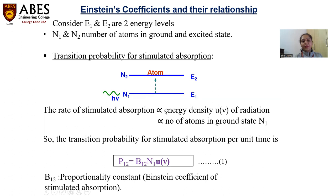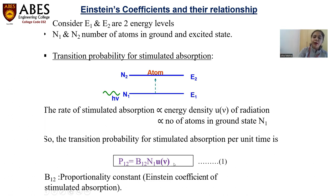If we remove the proportionality symbol, there will be a constant called B12 — the Einstein coefficient of absorption. N1 is the number of atoms in the ground state, and U-nu is the energy density of the incoming photon, which raises the atom from ground state to the higher excited state.